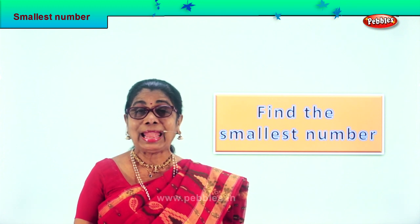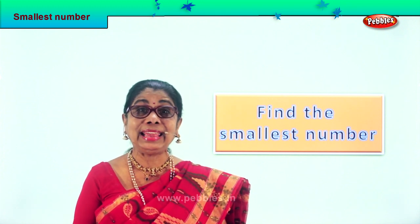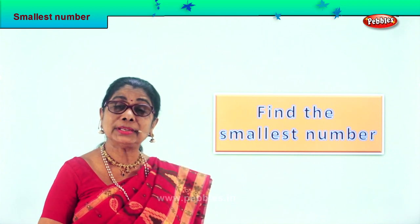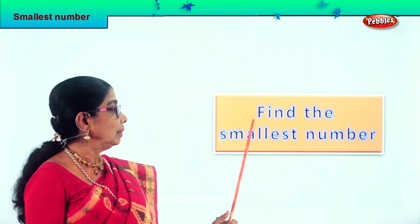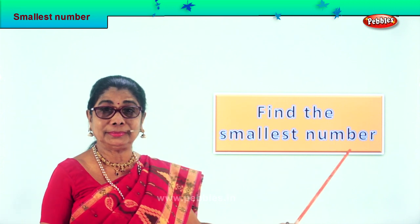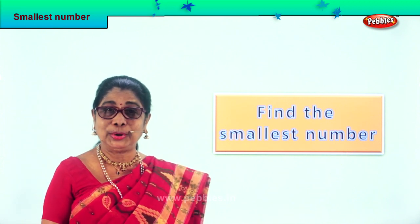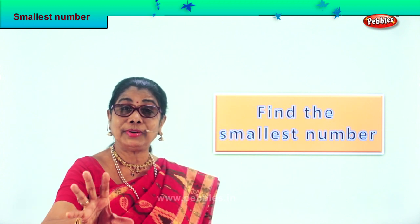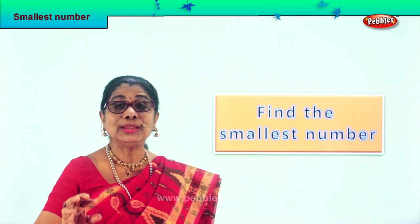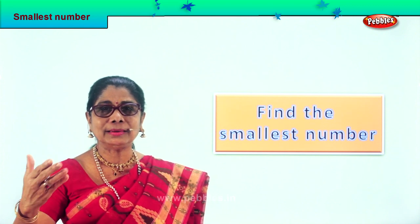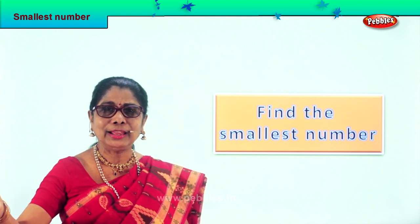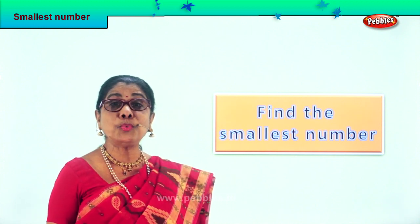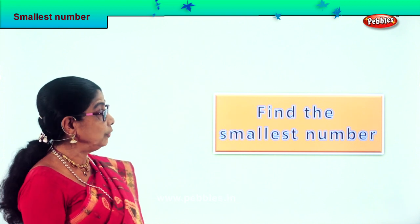Hi children, this is a very interesting exercise. I will give you a few numbers and you pick the smallest number. So what is the exercise we are doing now? Find the smallest number. There are a whole lot of numbers — you see, you look at tens, twenties, thirties, forties like that. Look at the number; it's all three-digit numbers. Find the smallest one among the numbers I give you.